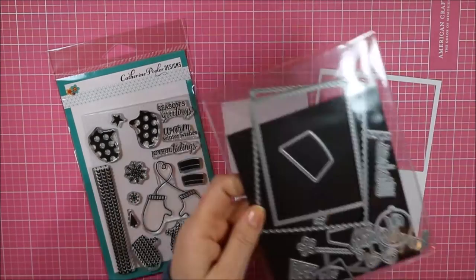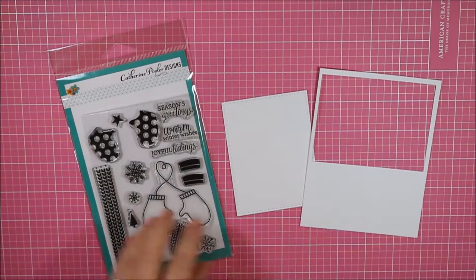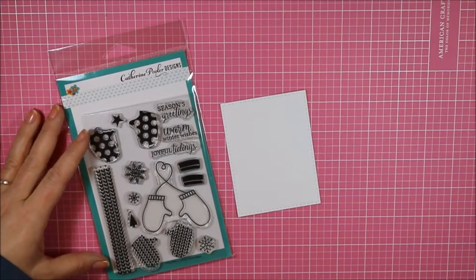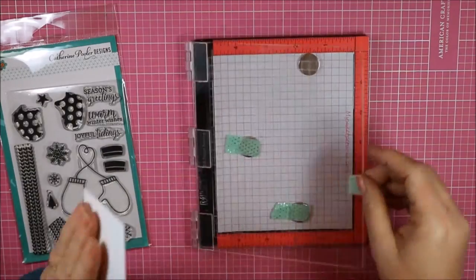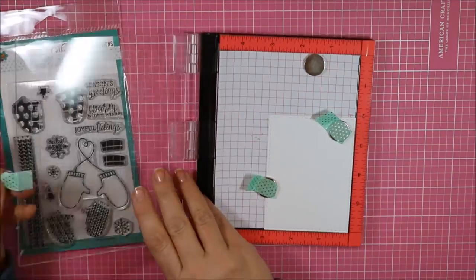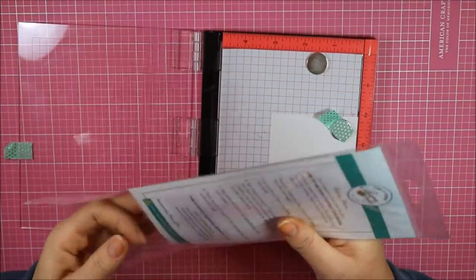I'm starting out with a piece of Tim Holtz Distress Watercolor Paper, and I die cut it out using the Birthday Journal Card Die from Sugar Pea Designs. This is the stitched rectangle, and now I'm going to pull out my mini MISTI.